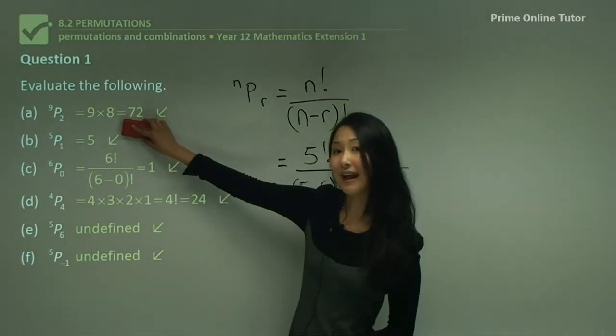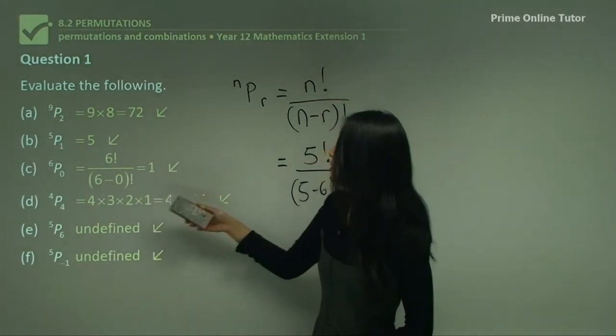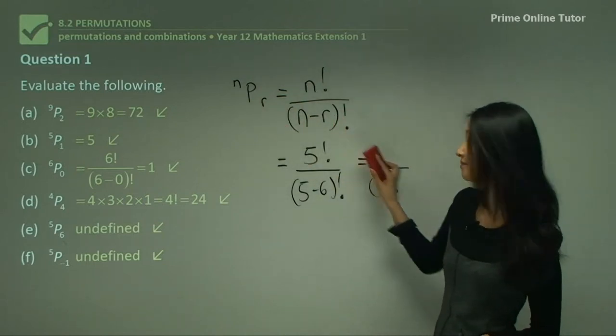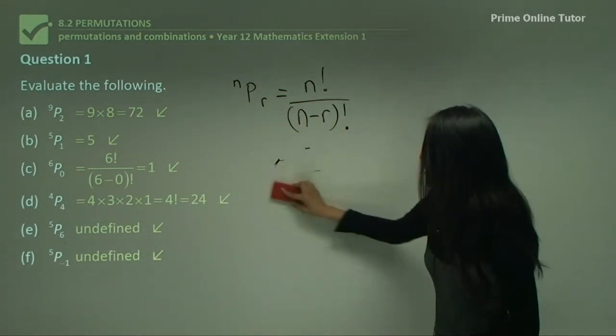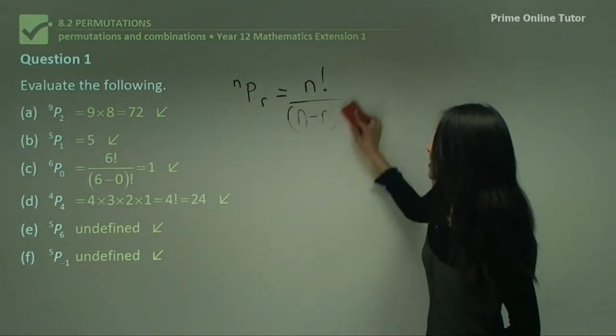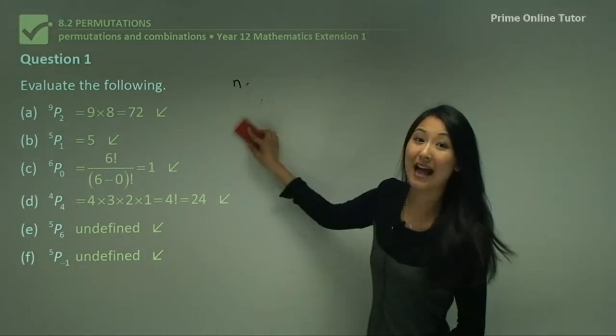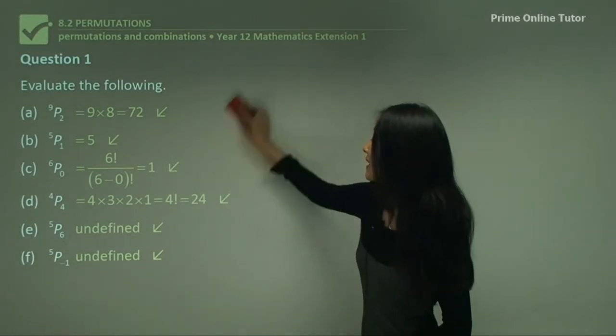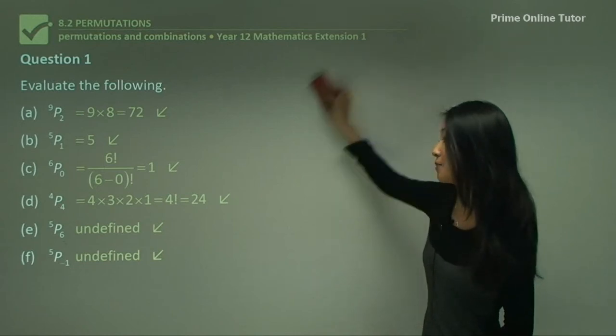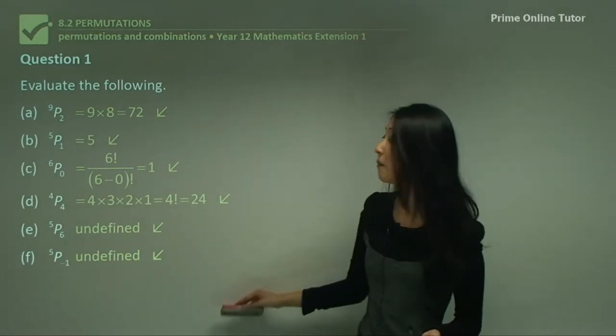You can see here that for most questions you're going to be using this way to work it out, but for some of them we do need to use this equation. Also, for your future permutations, there is a button on your calculator for this as well. You'll see that as a big P, and you usually need to press shift or something and you'll get that up.